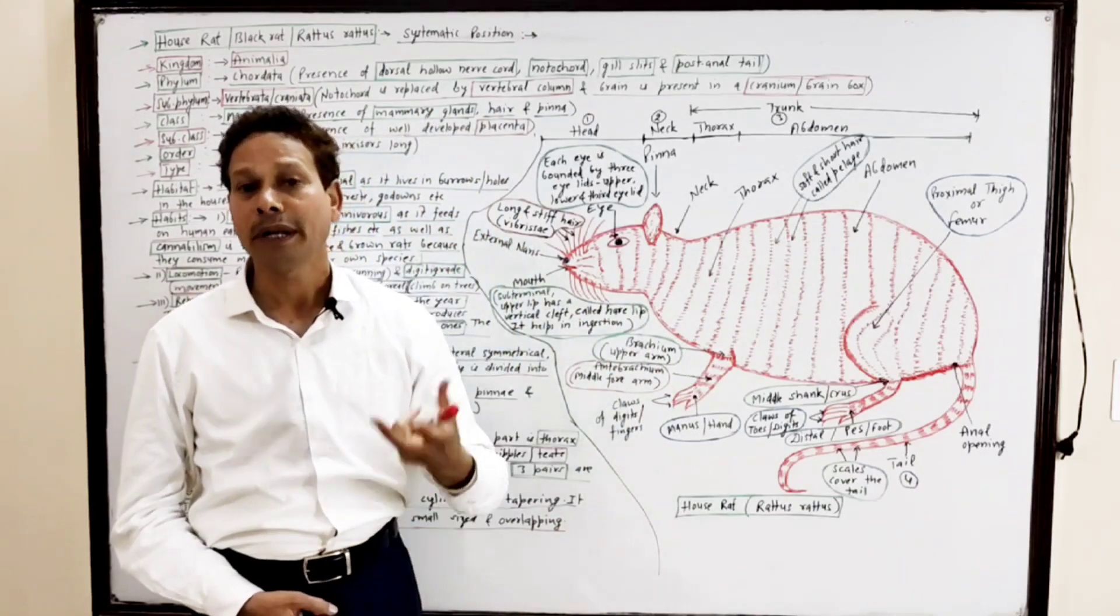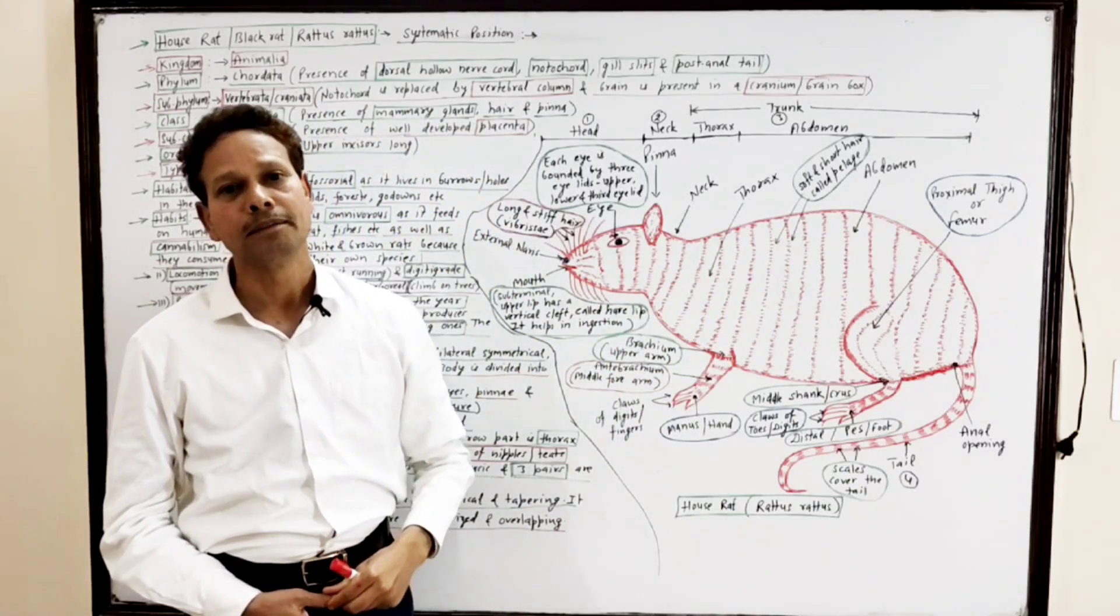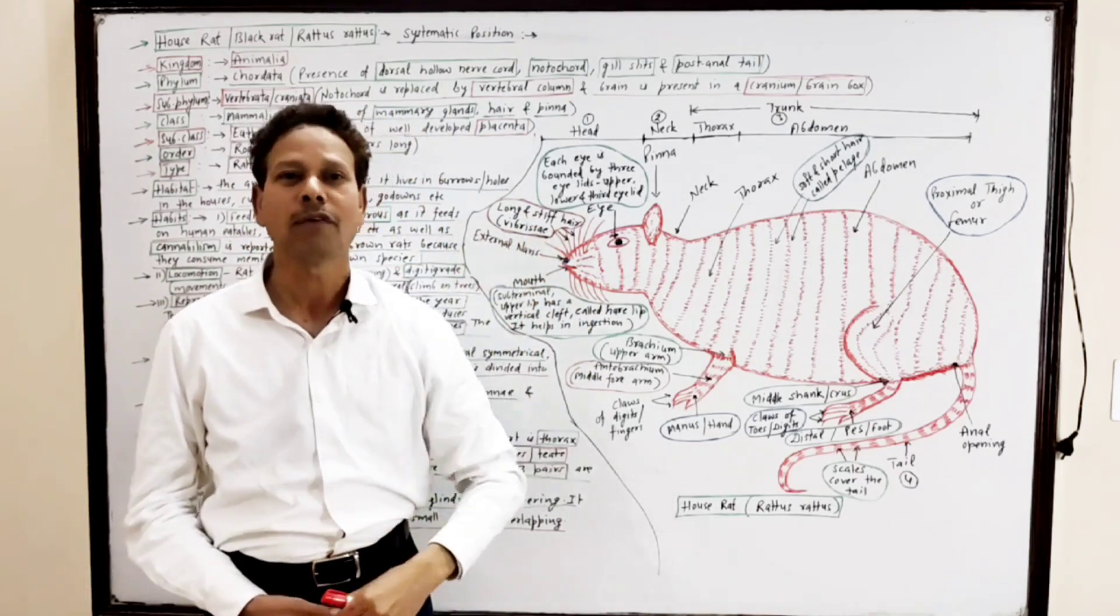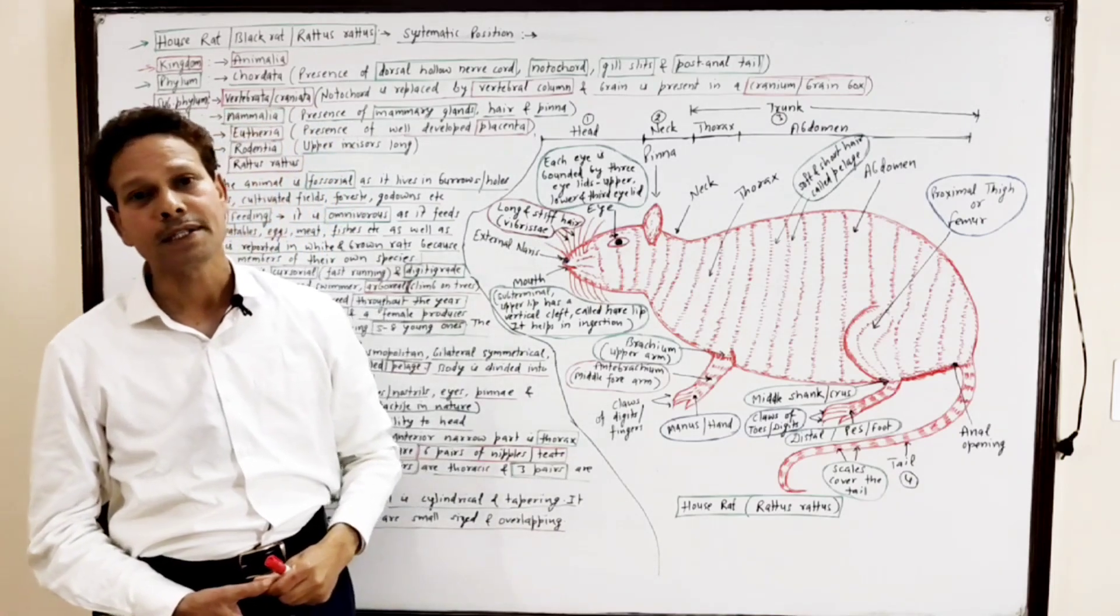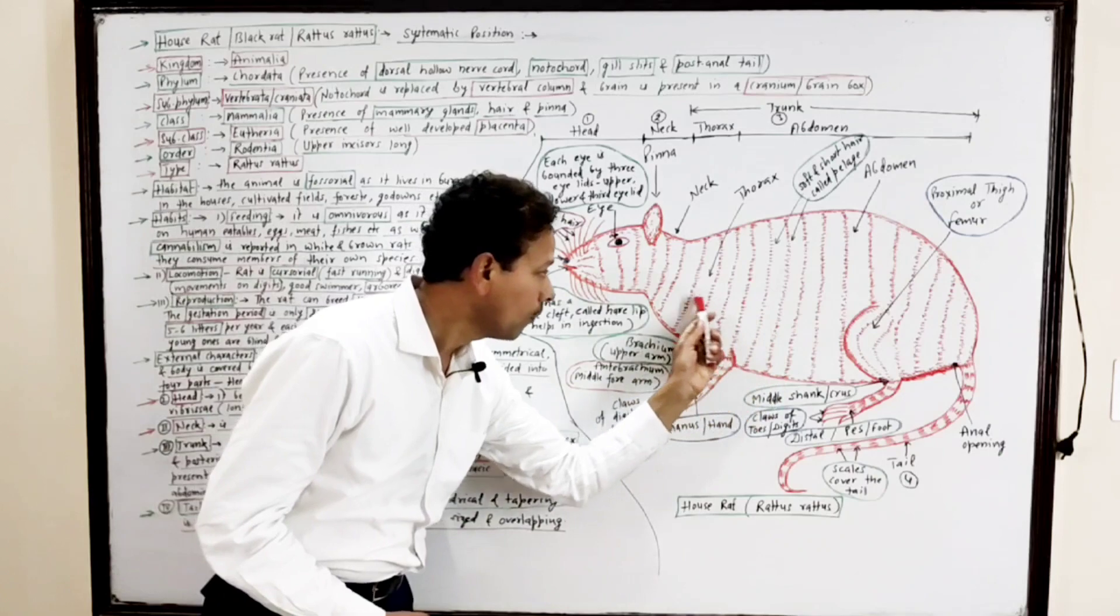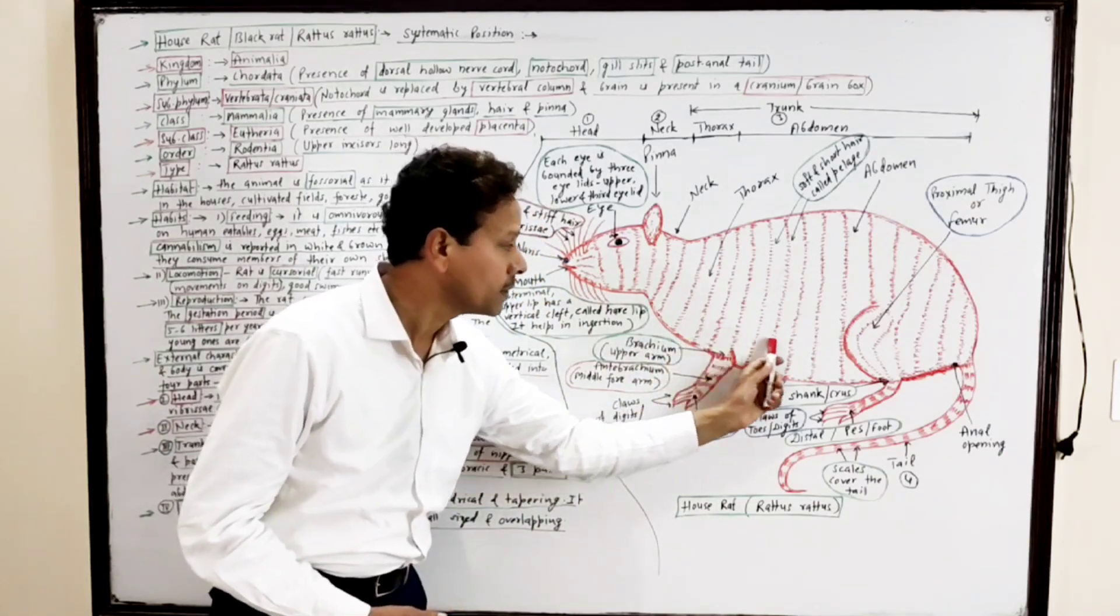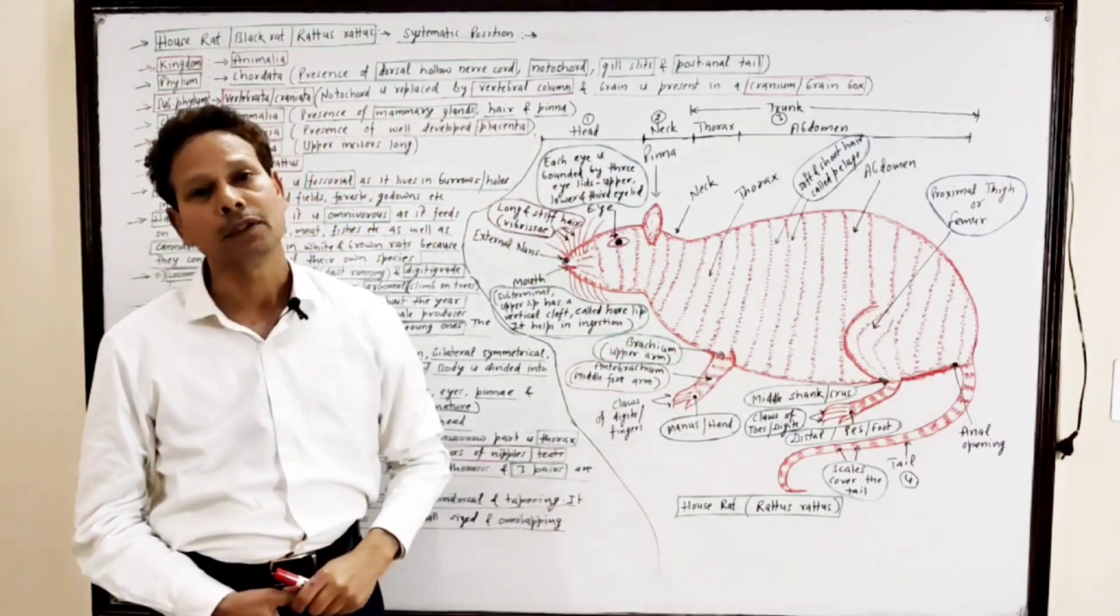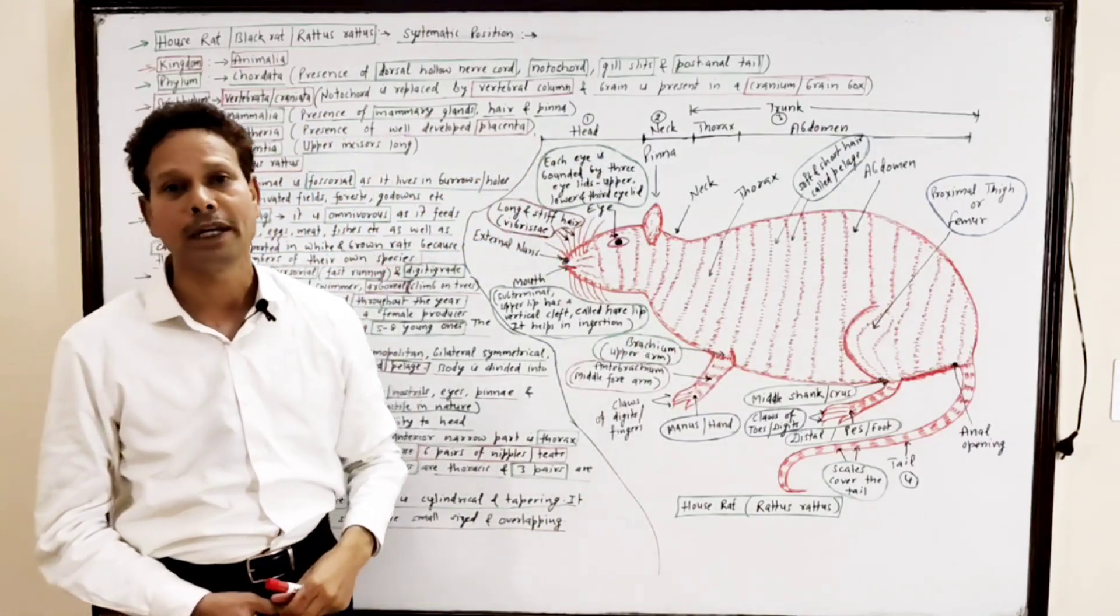On the ventral side, the trunk possesses six pairs of teats or nipples. Out of six pairs, three pairs of nipples are on thoracic region and three pairs on abdominal region.